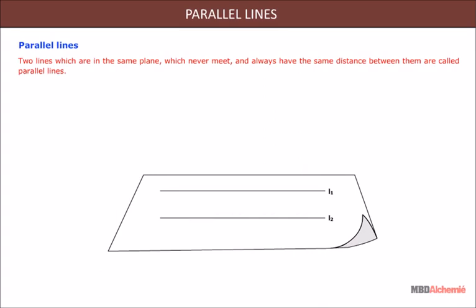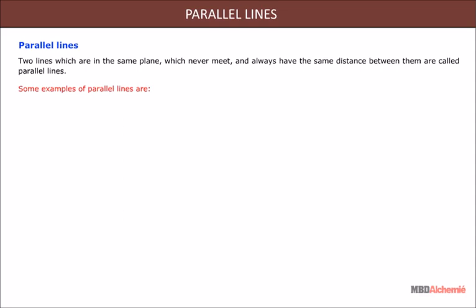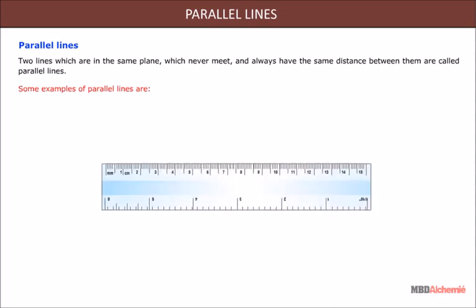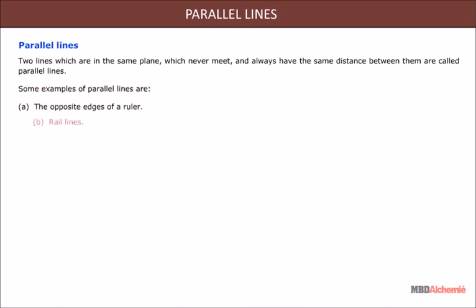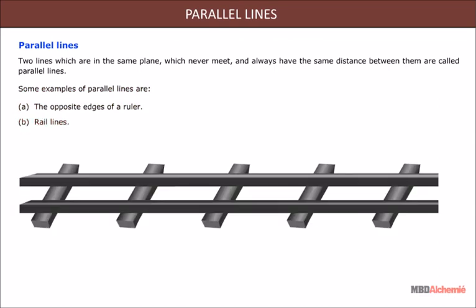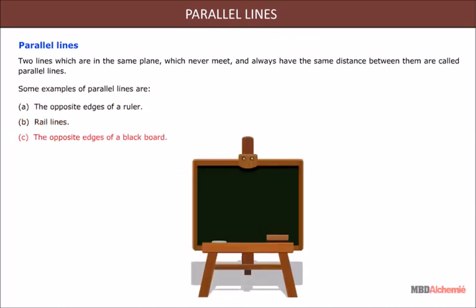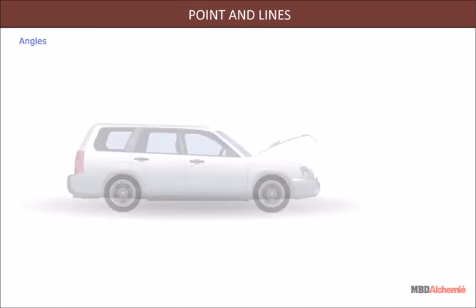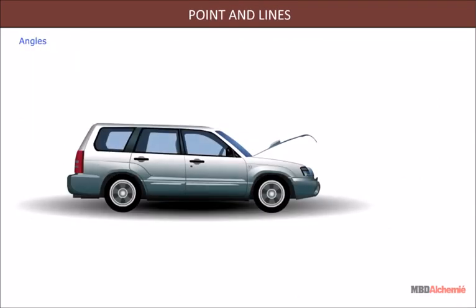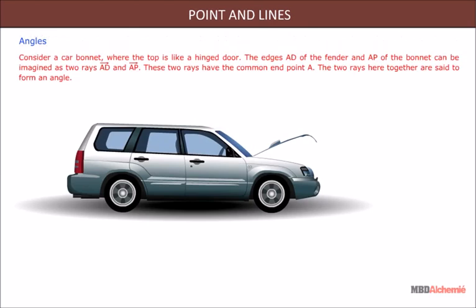Parallel lines: two lines which are in the same plane, which never meet and always have the same distance between them, are called parallel lines. Some examples of parallel lines are the opposite edges of a ruler, rail lines, and the opposite edges of a blackboard.